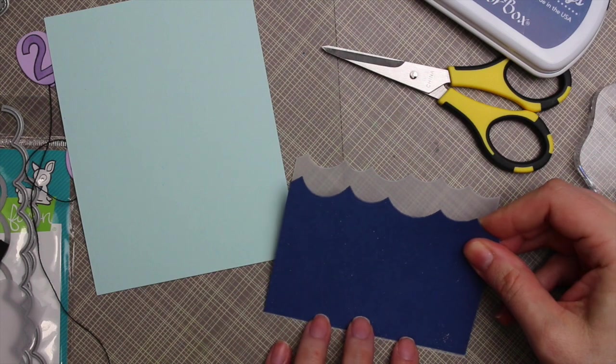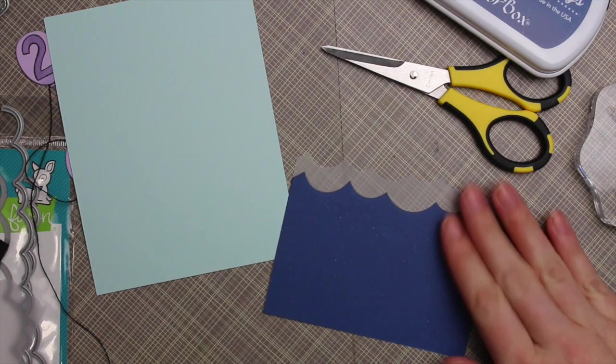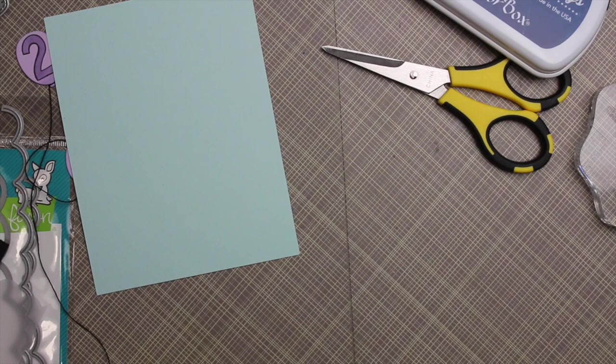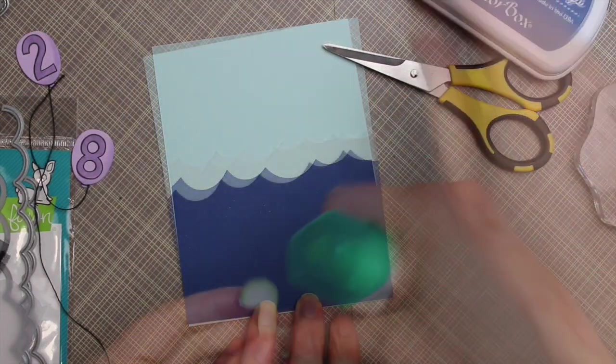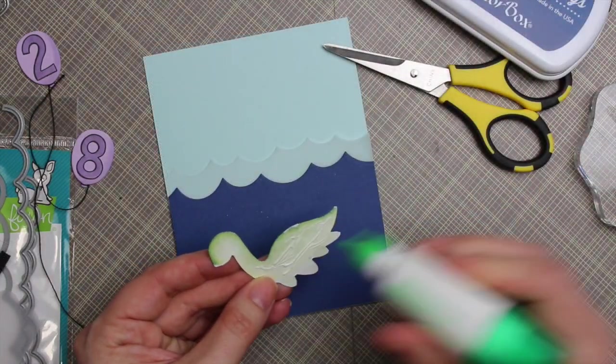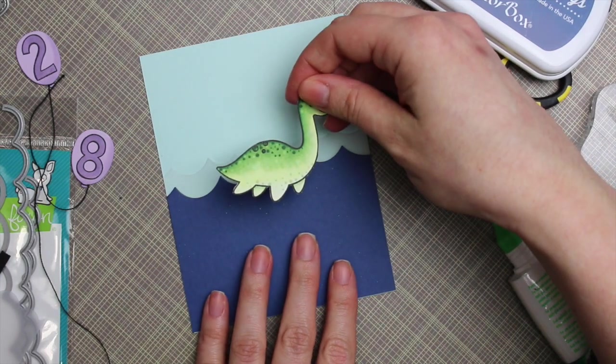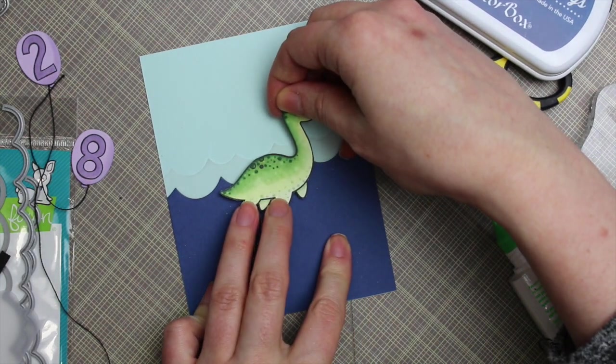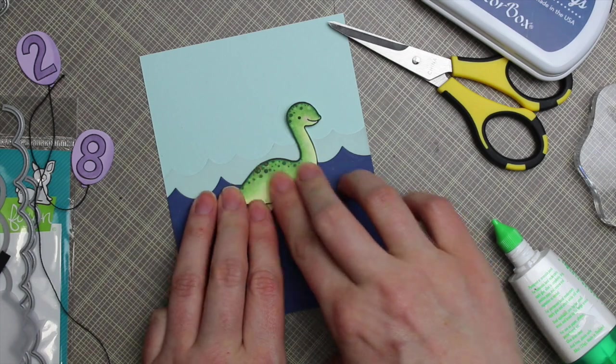So I started by adhering the blue cardstock to the largest piece of vellum. And then I adhered the little Loch Ness monster to that because I wasn't sure things were looking like they were going to be sitting too high up since I wanted to add, you know, clouds and a sun and balloons and all sorts of things.